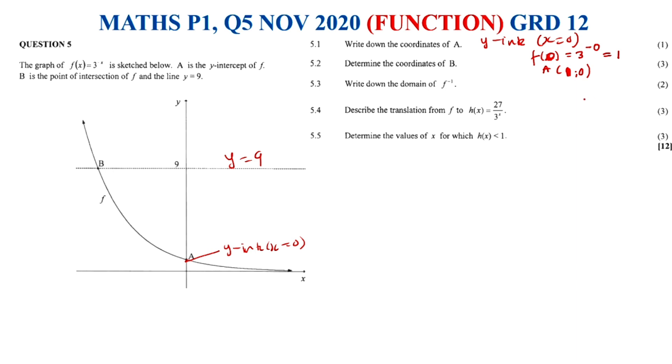And then let's move on, 5.2. 5.2 says determine the coordinates of B. B in this case is this point here. We already know at this point we don't know the x value, but we know that the y value is 9. So therefore, what we would do, we would go to our equation, the given equation, which is f(x) equals 3 to the power of negative x.